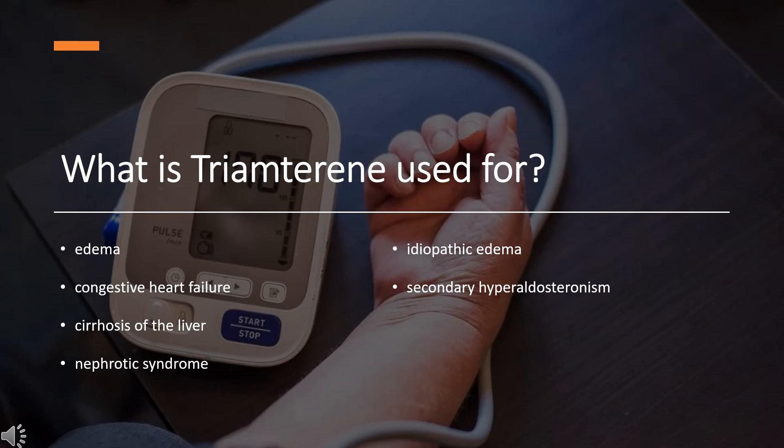Triamterine in combination with hydrochlorothiazide is indicated for the management of hypertension or treatment of edema in patients who develop hypokalemia following hydrochlorothiazide monotherapy, and in patients who require a thiazide diuretic and in whom the development of hypokalemia cannot be risked. Triamterine allows the maintenance of potassium balance when given in combination with loop diuretics and thiazide.